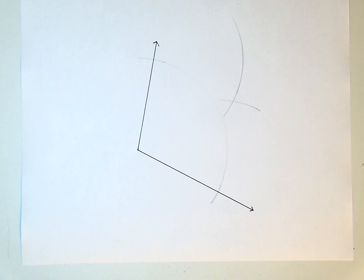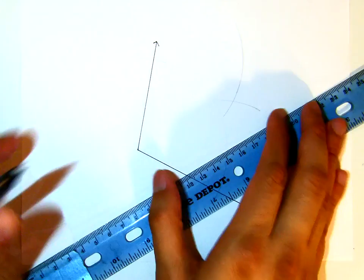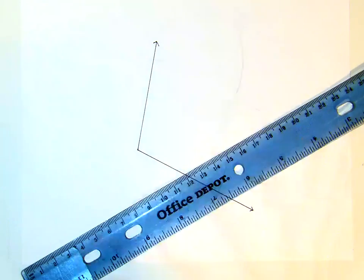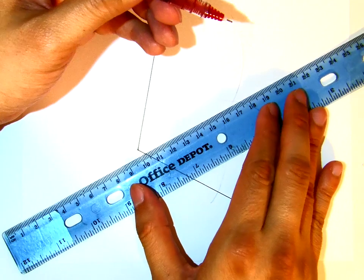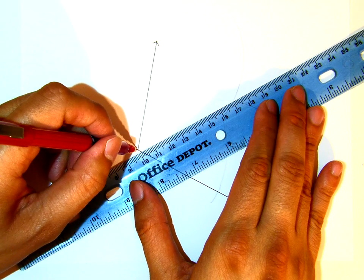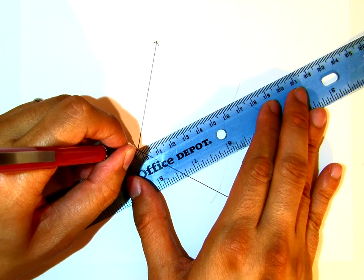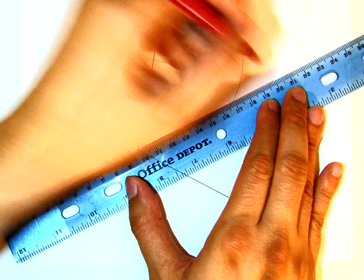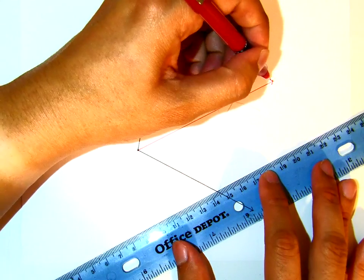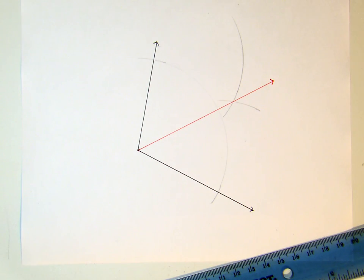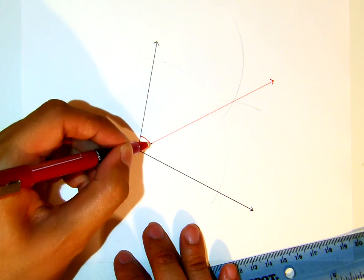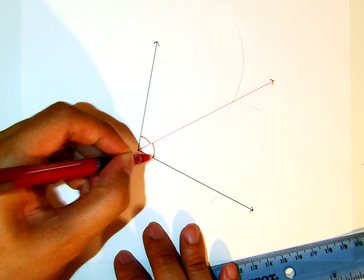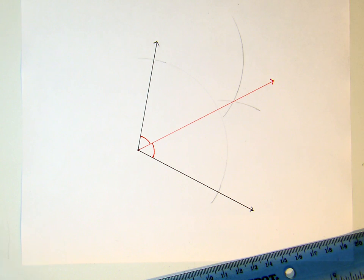Now, this point becomes the point where the angle bisecting ray will pass through. These are the two angles that are now congruent.